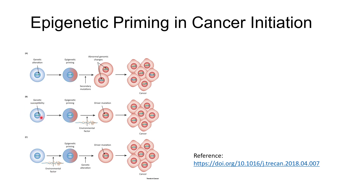The second pathway is genetic susceptibility — it is assumed that a change in genetic variation might lead to epigenetic priming, or initiation of epigenetic changes. After that, environmental factors, such as different food and eating habits, combine with epigenetic priming to result in a mutation that may cause cancer if not addressed in time.